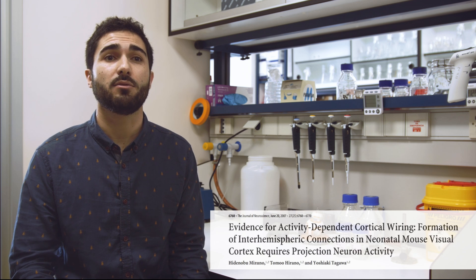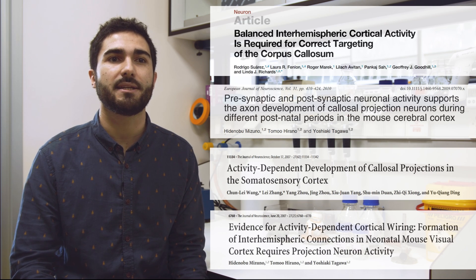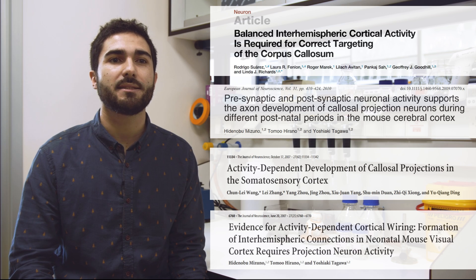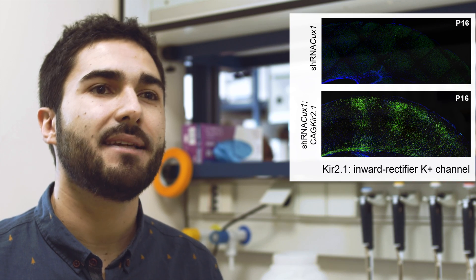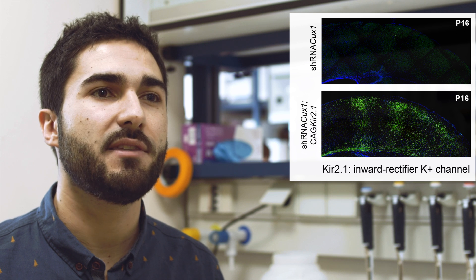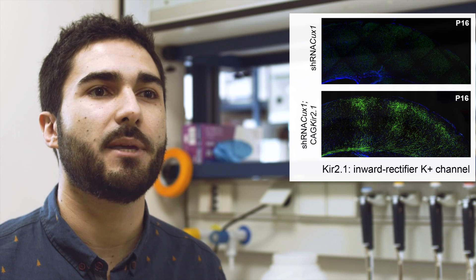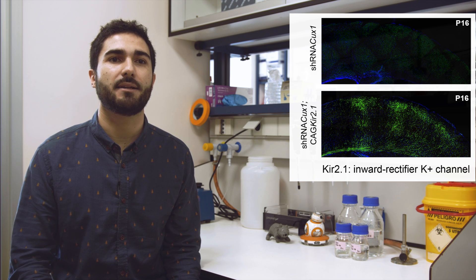It has been shown that reducing electrical activity changes the pattern of innervation in the contralateral hemisphere and eliminates many callosal projections. We decided to test whether activity is involved in CACS1-mediated callosal development. By modifying the electrical responses of CACS1-deficient neurons, we were able to partially rescue contralateral innervation, showing that CACS1-dependent phenotypes ultimately depend on electrical activity.